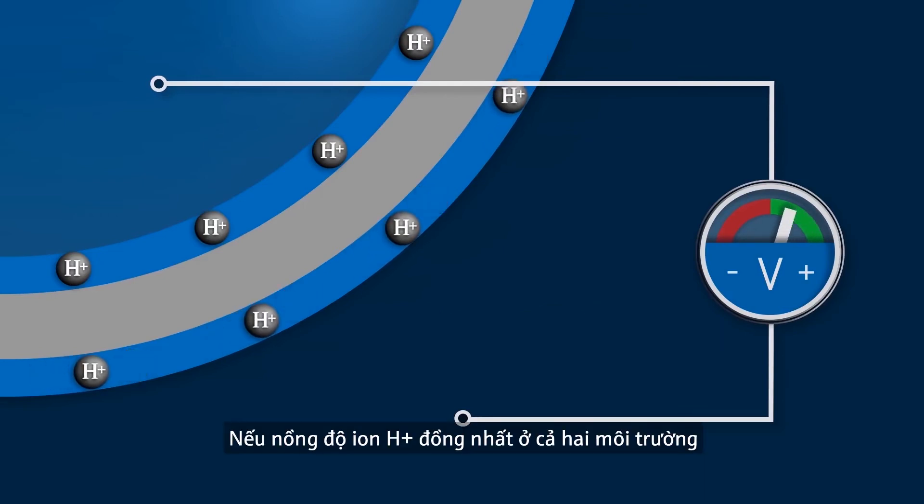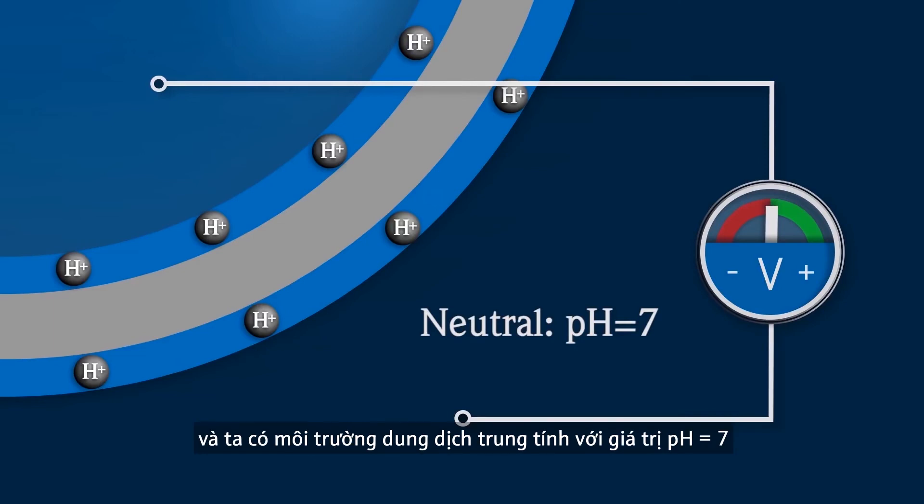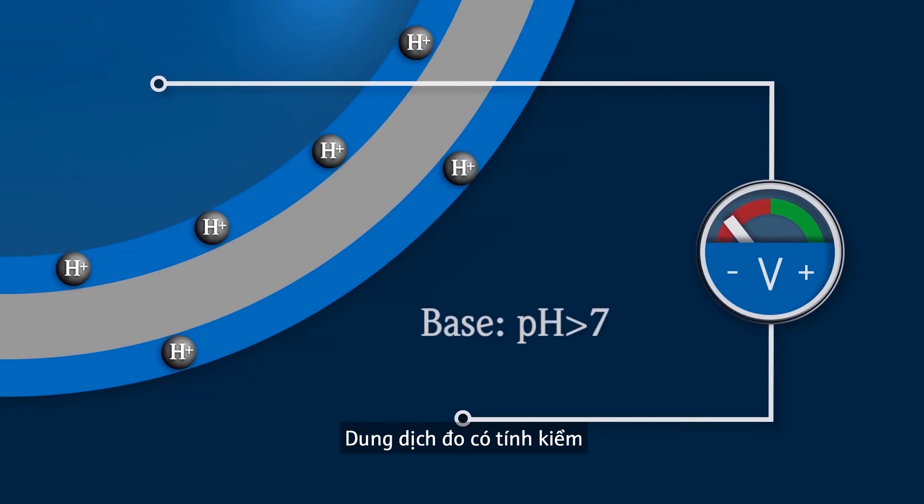If the hydrogen ion concentration is identical on both sides, no potential difference forms and the measured solution is neutral with a pH value 7. The measured solution is basic if the hydrogen ion concentration inside the glass bulb is higher than in the measured solution.